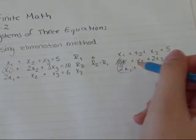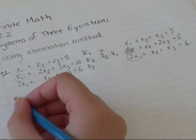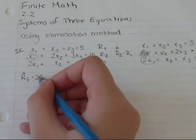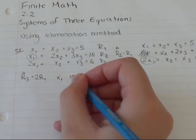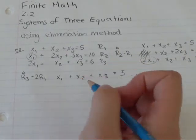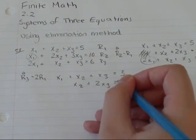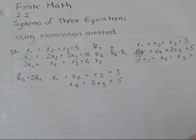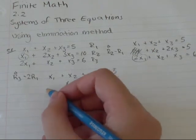Then I'm going to try and get rid of this 2x1. I'm going to do row 3 as the one I'm changing, changing it by going row 3 minus 2 times row 1. So I'll write down rows 1 and 2 first because I'm not changing those. x1 plus x2 plus x3 equals 5. Row 2: x2 plus 2x3 equals 5. For row 3 minus 2 times row 1: 2x1 minus 2x1 gives me 0x1.